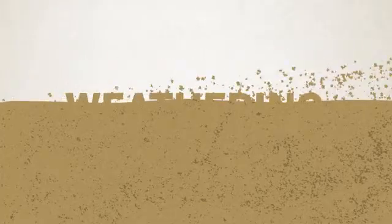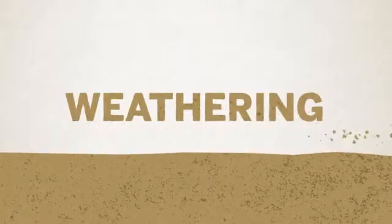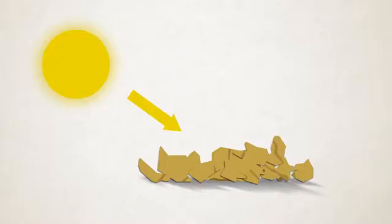The surface of Earth is constantly transformed by a process called weathering, where energy from the Sun causes rock to break down into smaller and smaller pieces.